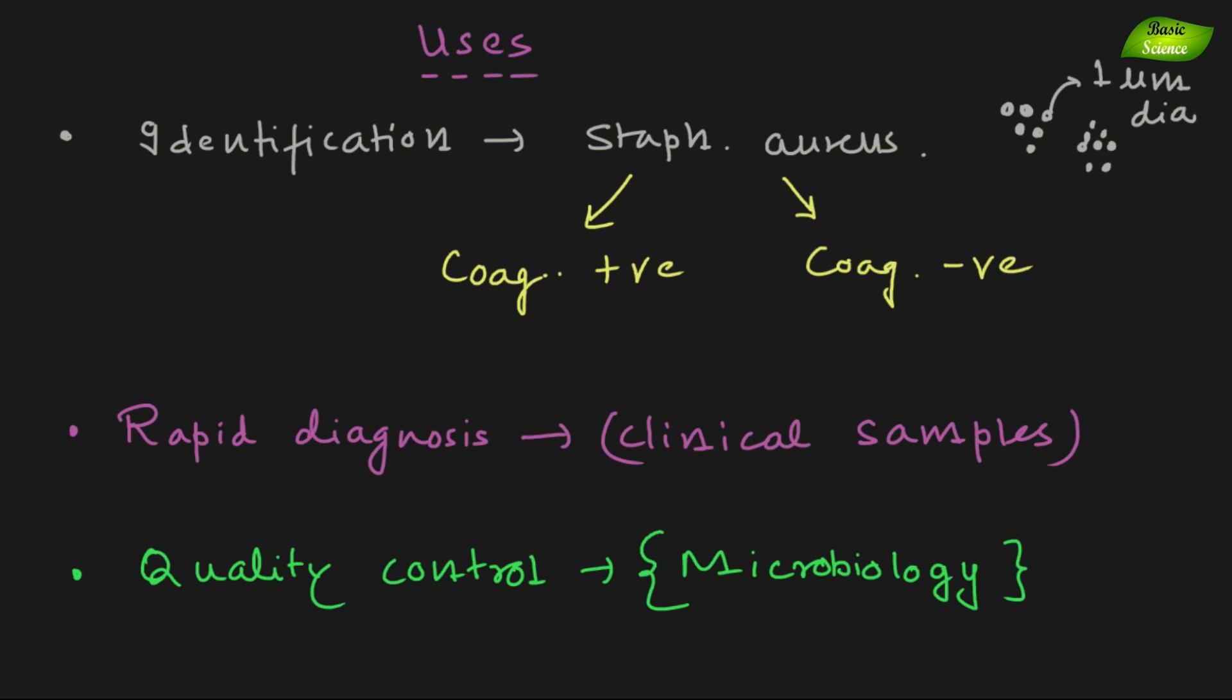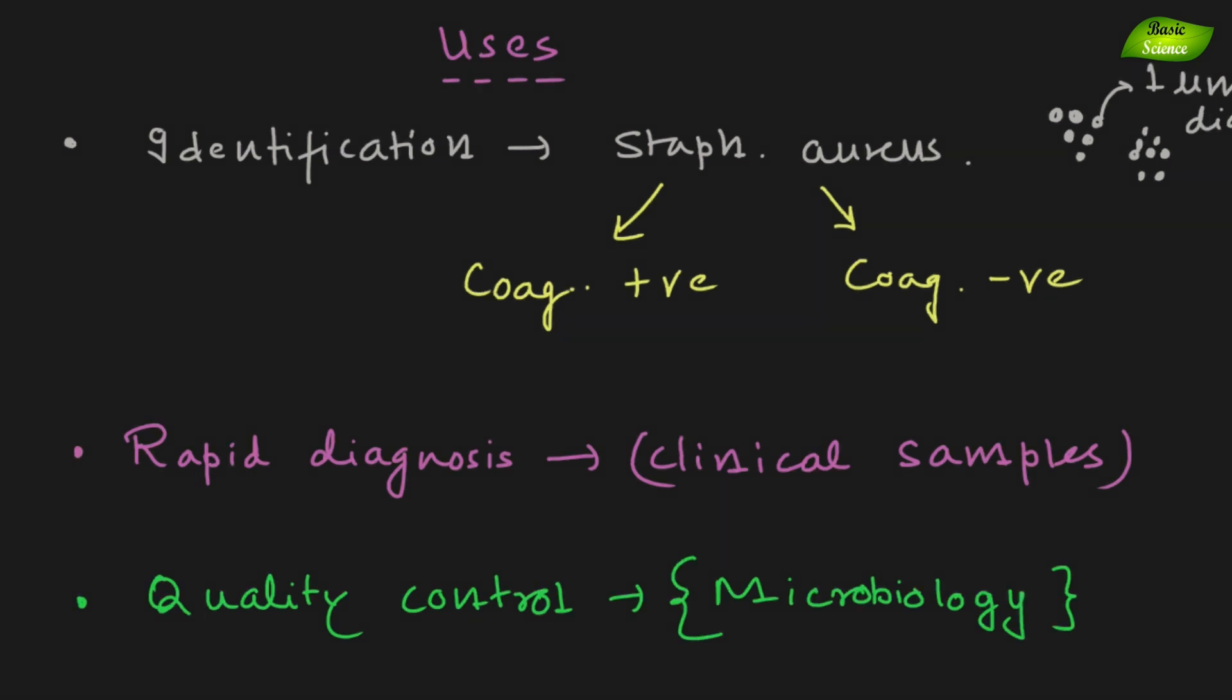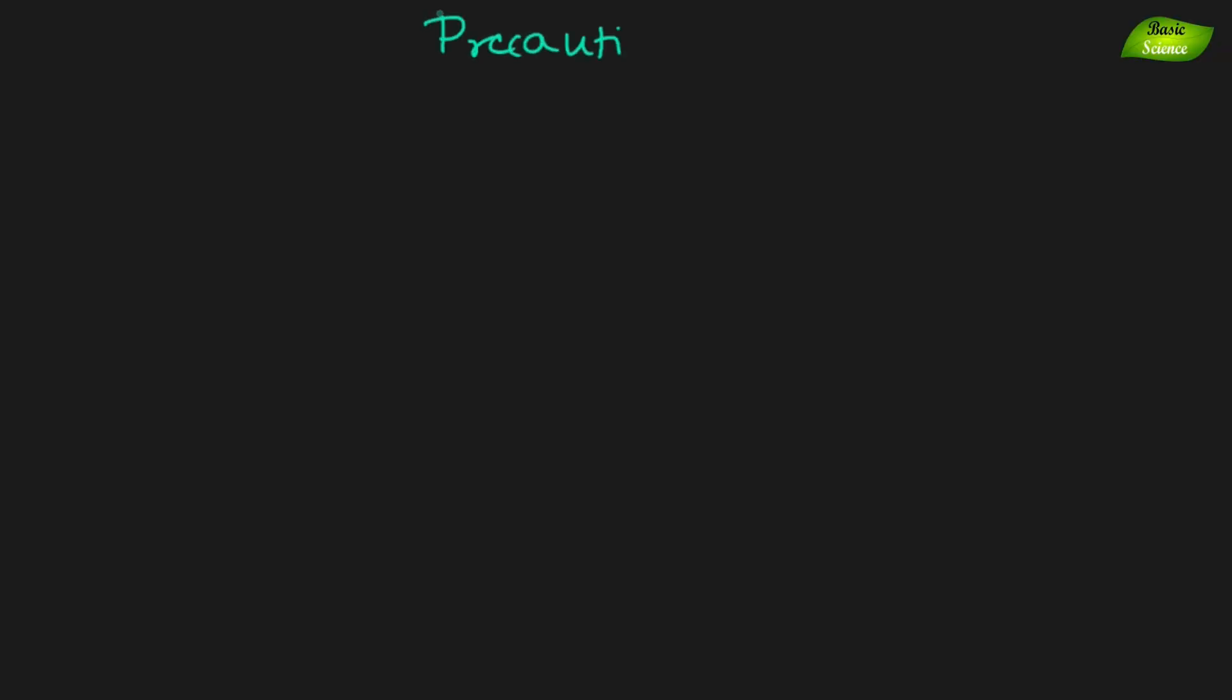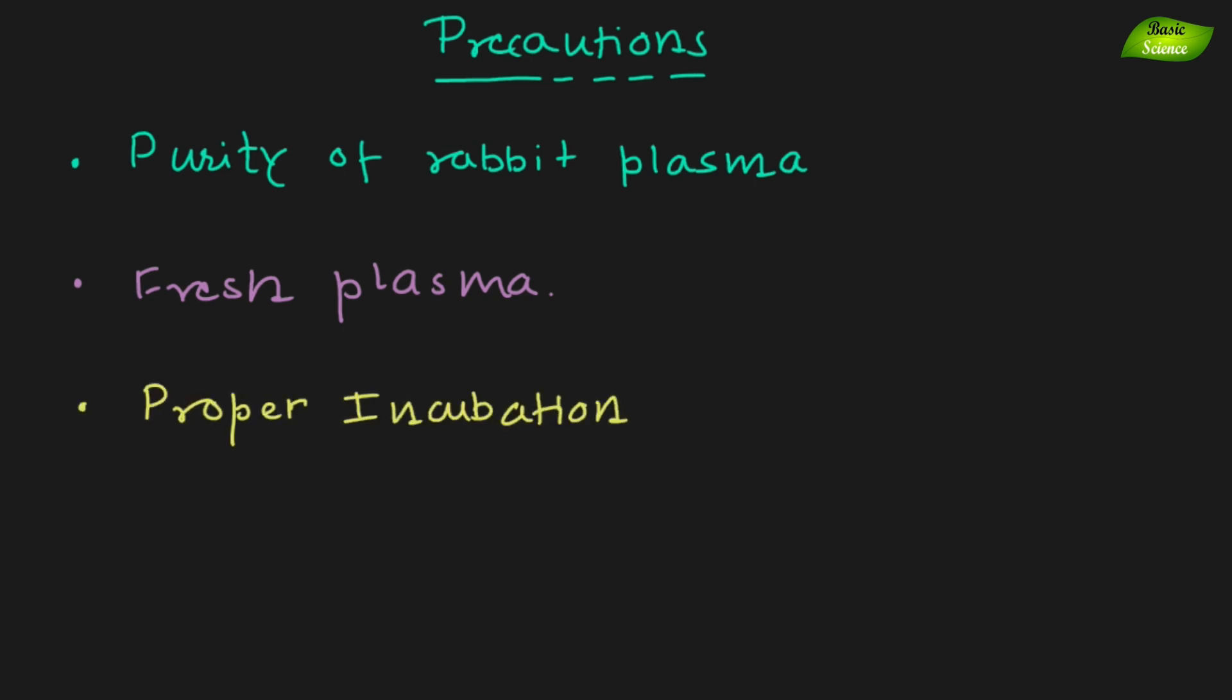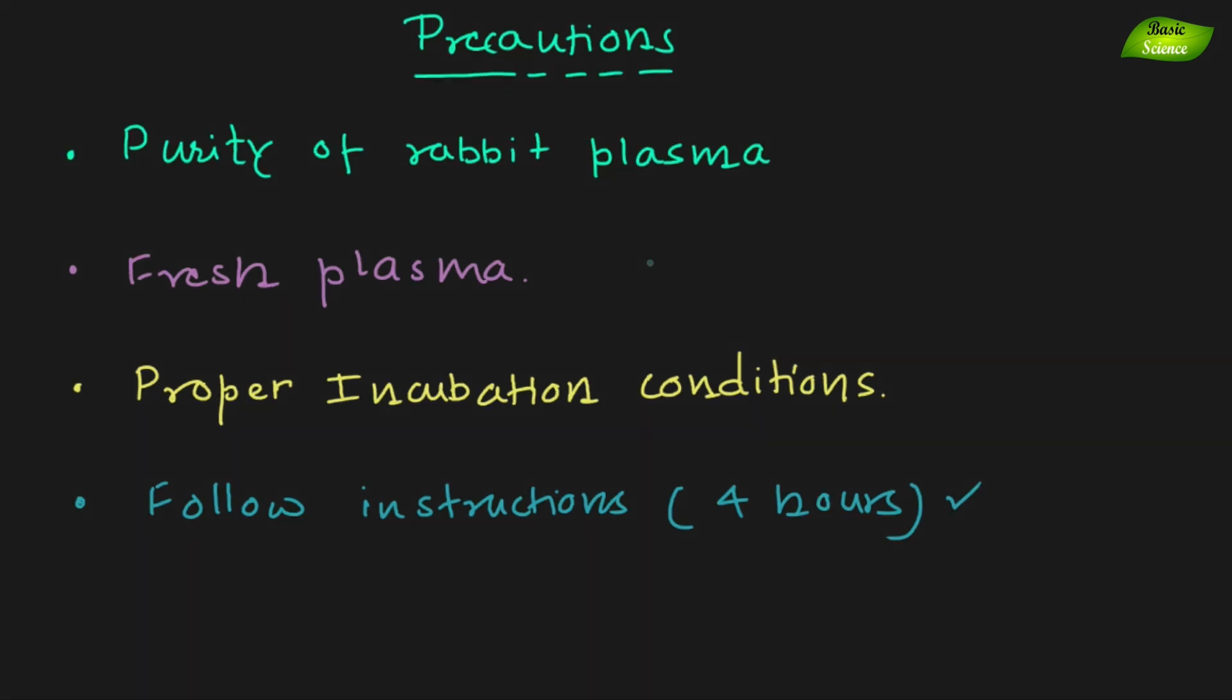Now let's move on to the precautions part, what are the important points that you need to remember. The first one is purity of the rabbit plasma, it should be pure, it should not have any contamination. Second one, fresh plasma should be used otherwise there will be contamination. Third one is proper incubation condition specifically the temperature and follow the instructions that usually you will see are available for performing this particular test. So all those four important things are there, why you have to be careful when you're performing this test.